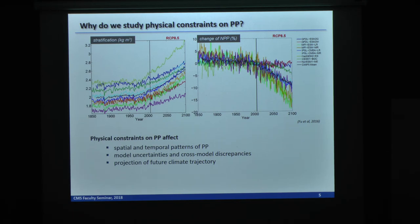And also the physical constraints, as you can see here, into the future, influence the projection trajectory of the future climate. Directly, they're influencing the biophysical interaction. And indirectly, they influence the carbon pump and also the carbon cycle within the earth.